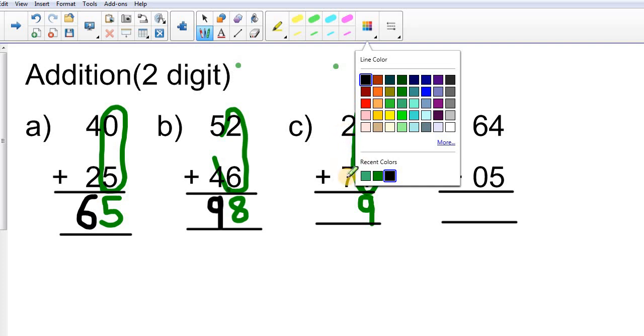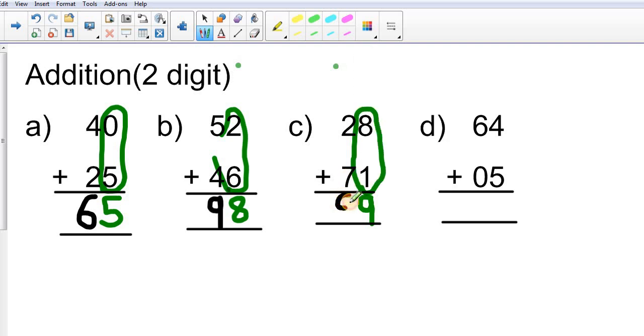7 plus 2. So I have to move two steps ahead from 7, 8 and 9. So my tens number is 9. 99 is my answer.